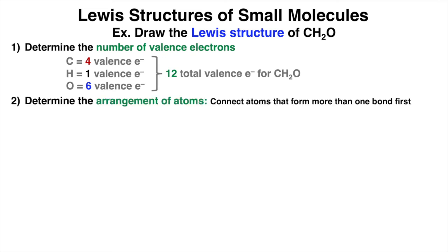Step two is to determine the arrangement of atoms. So let's draw the valence electrons for each atom in the molecule. And just to help you organize the atoms, I color-coded the oxygen valence electrons in red, hydrogen electrons are in black, and oxygen valence electrons are in blue.